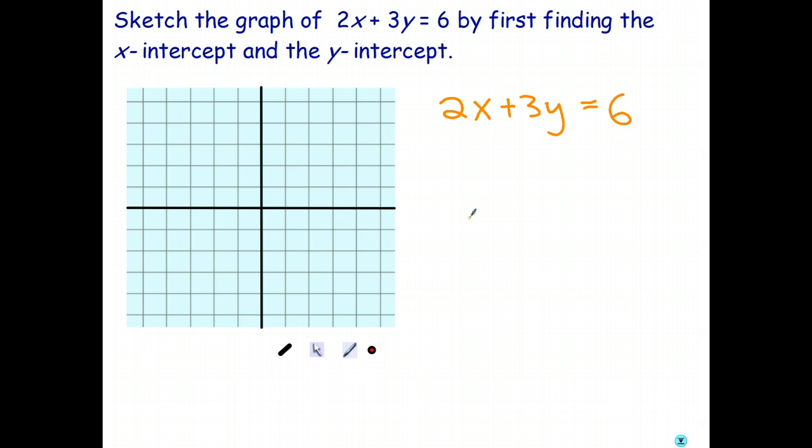But an easier way to do it is to say, well, anywhere on the x-axis, y equals 0. And anywhere on the y-axis, x equals 0. So let's go ahead and find out where this graph crosses the x-axis by letting y equals 0.